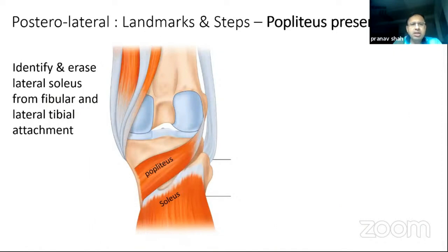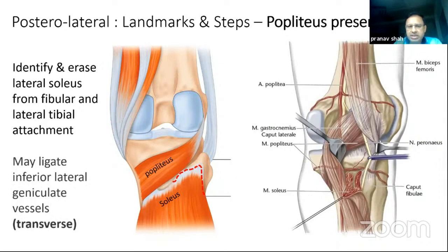Regarding important anatomical landmarks: this is the knee viewed from behind. The two important muscles we will encounter posteriorly are the popliteus and soleus muscles. The soleus will be released downward from its attachment. Once that is done, we will encounter a medial geniculate vessel — most likely the lateral inferior geniculate vessel — which may require cauterization or ligation.